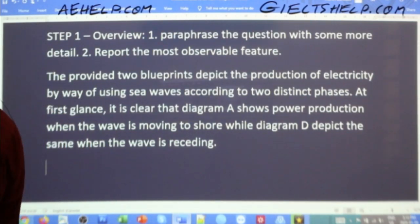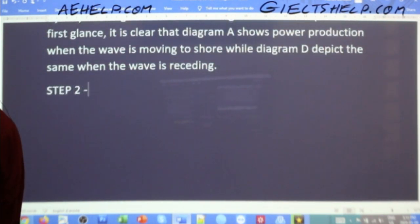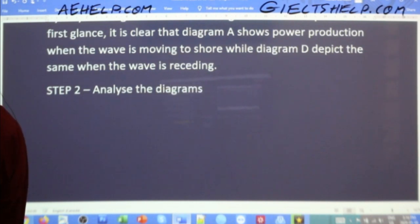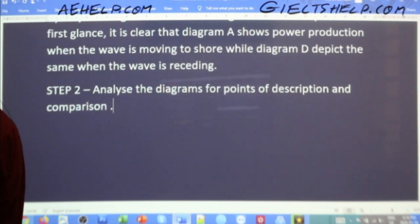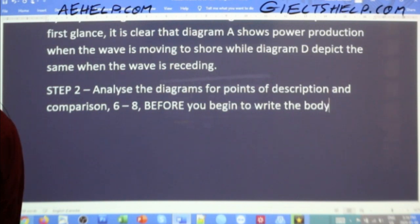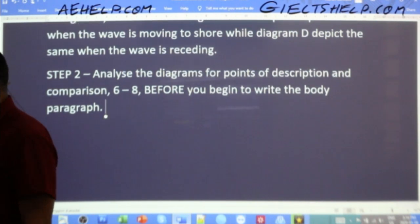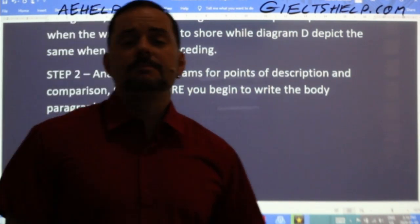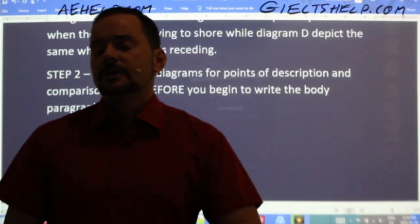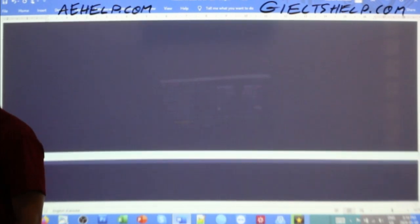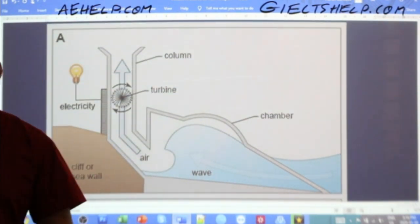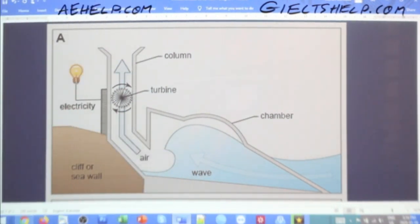Step two is to analyze the diagrams for points of description and comparison — roughly six to eight points — before you begin writing the body. Students, please don't start writing 'firstly' or 'secondly' right away. Before you put pencil to paper or fingers to keyboard, look at the diagrams and label your points of analysis — what you actually want to discuss.